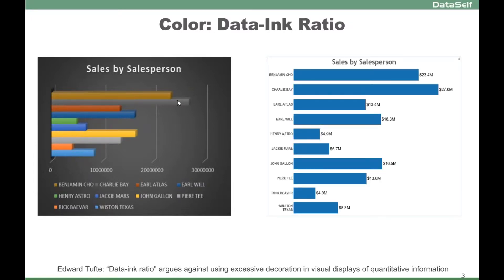This is a much cleaner, more straightforward way to tell the same message. Here, every bar has the salesperson name, the bar length proportional to the amount, and the amount at the end of it. Very clean, very simple.